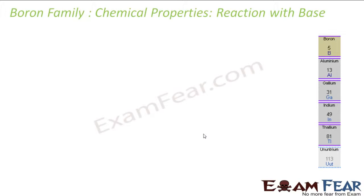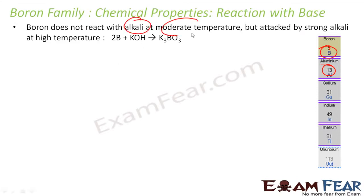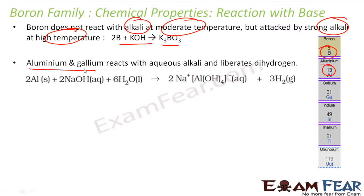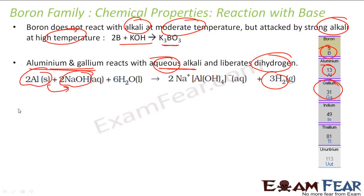Let's talk about the reaction with base, focusing on boron and aluminium. Just as boron does not react with weak acid at moderate temperature, boron also won't react with weak alkali at moderate temperature. But with strong alkali at high temperature, it is attacked — for example, boron plus potassium hydroxide gives K3BO3. Aluminium and gallium react with aqueous alkali and liberate dihydrogen. That is why aluminium is amphoteric: because it reacts with both acid and base.